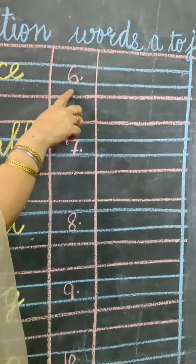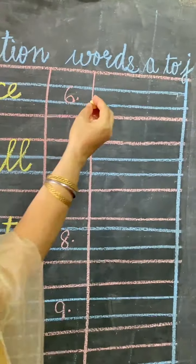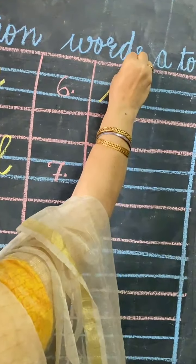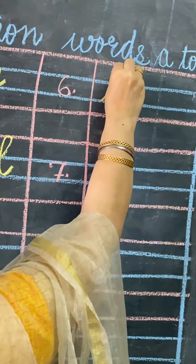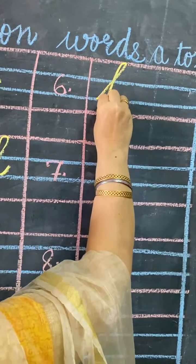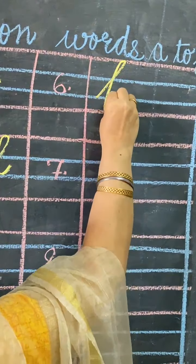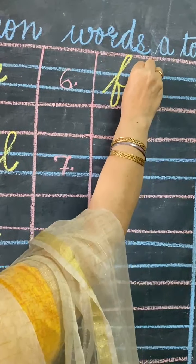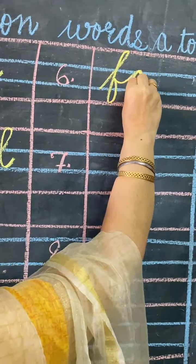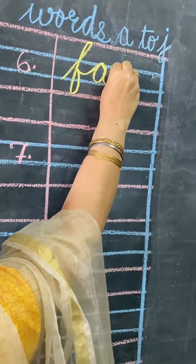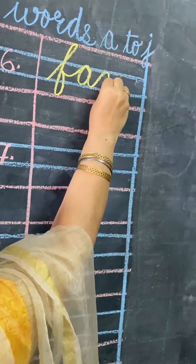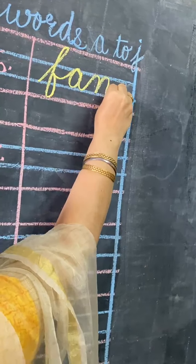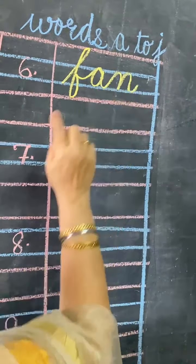Number 6, dictation word is F for Fan. F will come in four lines. Then A — A will come in two middle lines. N will come in two middle lines. F, A, N — fan.